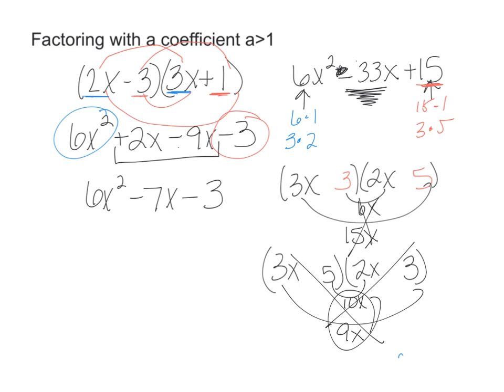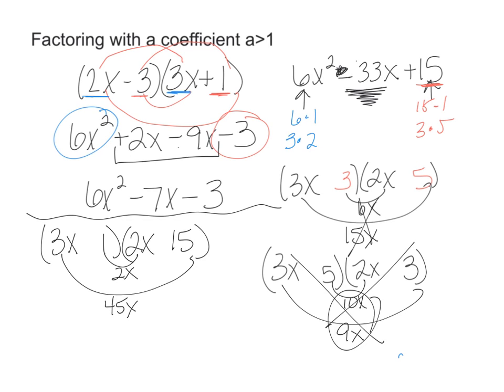Let's try another one. 3x and 1, and 2x and 15. So we'll try the 15 times the 1. When I do my outside, I get 45x, and my inside, I get 2x. Those add to 47 or subtract to 43, not the 33 that I want, so again, that does not work.